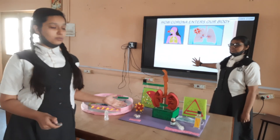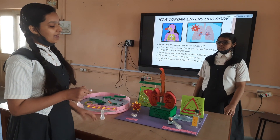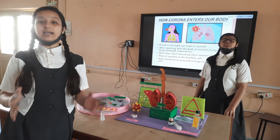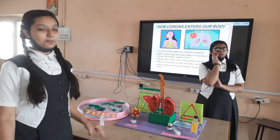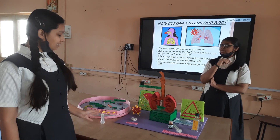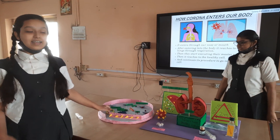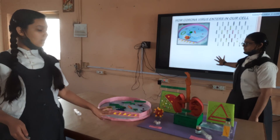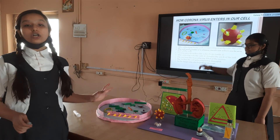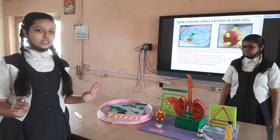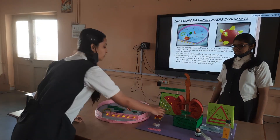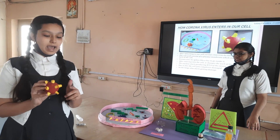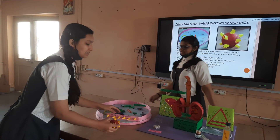After entering into the body, the virus attaches itself to the healthy cell lining of the nose, throat, and lungs. Then they start executing their master plan. Let us zoom in now. This is a healthy cell. In a healthy cell, the cell wall consists of a plasma membrane. The plasma membrane works as a lock of the cell — it does not let any strange thing in. As we all know, corona has protein spikes, and corona uses this protein spike like a key to get inside the healthy cell.